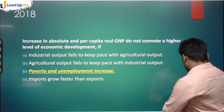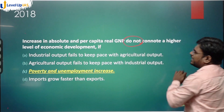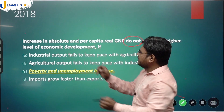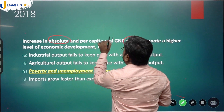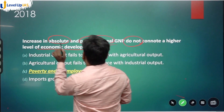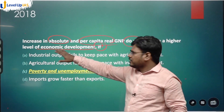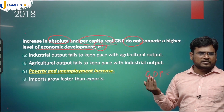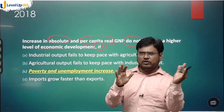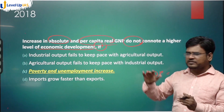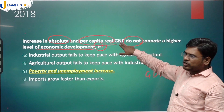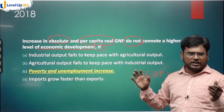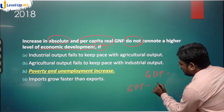The question involves increase in absolute and per capita real GNP not being able to indicate a higher level of economic development. If you know the GDP formula, it uses exports, imports, investment, and savings. There are three types: manufacturing GDP, agriculture GDP, and services GDP. GNP is gross national product — GDP and GNP differ slightly by the addition or subtraction of externally earned values.